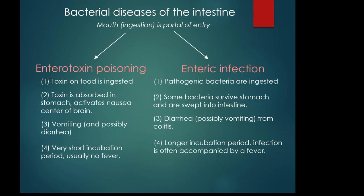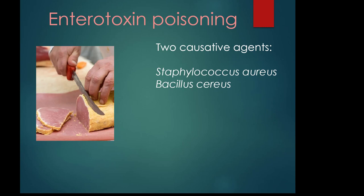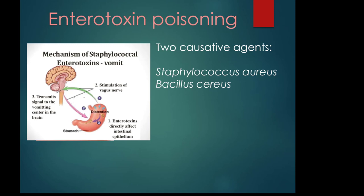For enterotoxin poisoning, the major causative agents are Staphylococcus aureus and Bacillus cereus. Staph tends to be salt tolerant, meaning salt added to preserved meats to prevent bacteria from colonizing won't stop Staph. The food source is usually contaminated by Staphylococcus aureus from nasal cavity contact. Refrigeration slows down metabolic growth rate so bacteria are unlikely to replicate to levels where they secrete large quantities of toxins. Heating food after the toxin is already present will kill the bacteria but not the toxin.